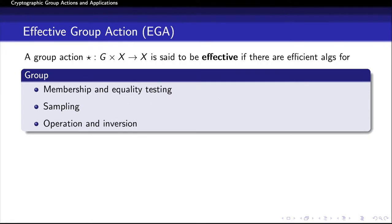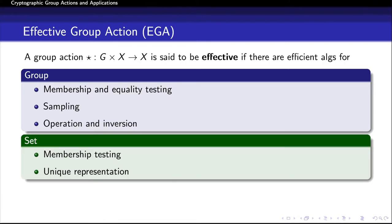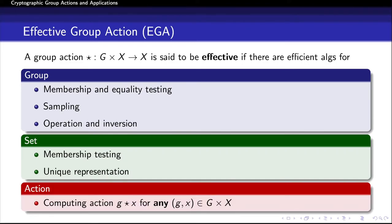Now I'm going to define an abstraction called effective group action, or EGA, which we will use for our framework. An effective group action is a group action with some algorithmic properties. We say that a group action is effective if we have efficient algorithms for the following: for the group G, we require efficient membership and equality testing, along with polynomial-time algorithms for sampling uniformly from the group, and efficient group operation and inversion. For the set X, we require efficient membership testing and unique representation. Finally, evaluating the action g star x should be efficiently computable for any pair g and x.